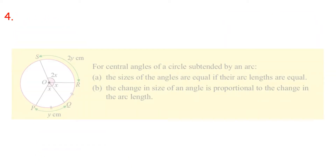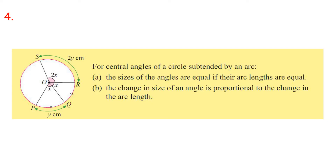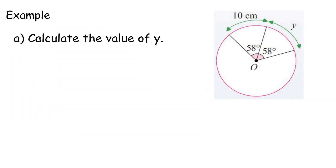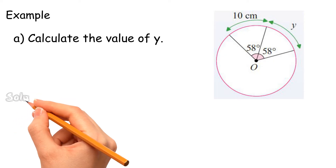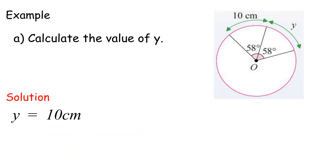Property 4: For central angles of a circle subtended by an arc — first, the sizes of the angles are equal if their arc lengths are equal; second, the change in size of an angle is proportional to the change in arc length. Example A: Calculate the value of Y. Y equals 10 centimeters.